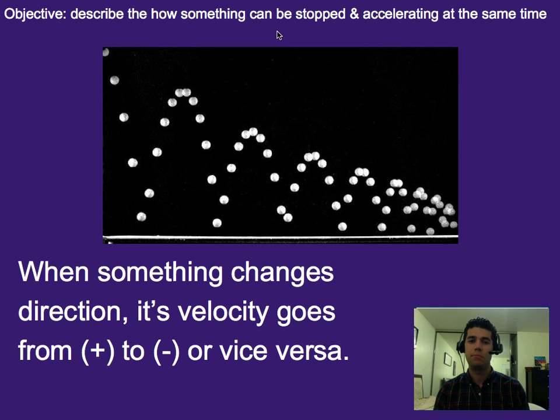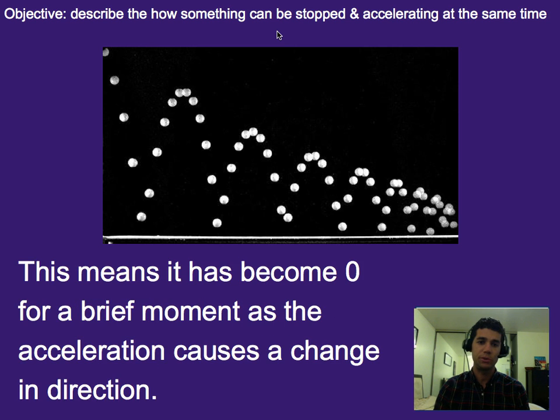So a more general scenario is anytime something changes direction, its velocity goes from positive to negative, or vice versa, depending on which direction you call positive and which direction you call negative.